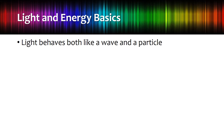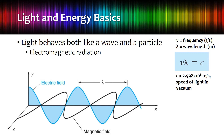Before we go any further, it's really important that you understand some basics of light and energy. Light behaves both like a wave and a particle — they call this particle-wave duality. As a wave, light is electromagnetic radiation, and you can see here that you have waves both in an electric field and a magnetic field. These are perpendicular from each other at a 90-degree angle: the electric field is in the plane of your screen, the magnetic field is in the plane coming in and out of your screen.